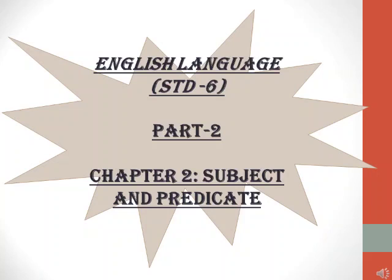Before starting this chapter, let me first revise what we have done in our previous class. We had done what is a sentence. As you all know, a group of words which make a complete sense is known as a sentence. And how many types of sentences are there? There are 4 kinds of sentences which are declarative, which is also known as assertive, interrogative, imperative and exclamatory.